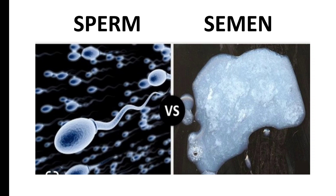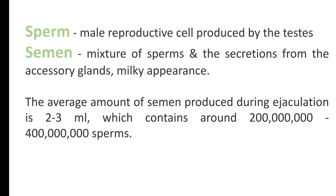Semen contains sperm cells which are capable of fertilizing the female's ovum. It is a milky or grayish-white bodily fluid. Spermatozoa is a male reproductive cell or gamete, and semen is a mixture of sperm along with secretions from the accessory glands.